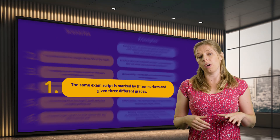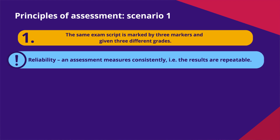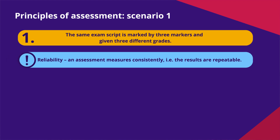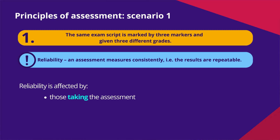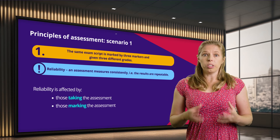In this first scenario we have a problem with reliability. If a student is getting a different mark depending on who's marking them, can we be really sure that mark reflects what they know, understand and can do? There are a couple of factors that contribute to reliability. The first is the student themselves — how they're feeling on the day of the exam, whether they're feeling anxious or under the weather, and whether that could affect how they perform. The next factor is who's marking them. If a marker is a bit generous or a bit severe, a student's mark might not really reflect what they know, understand and can do.